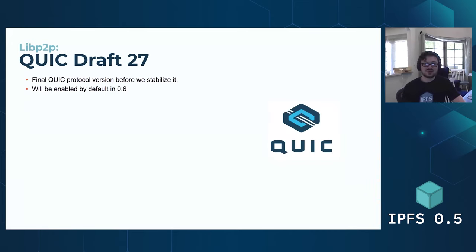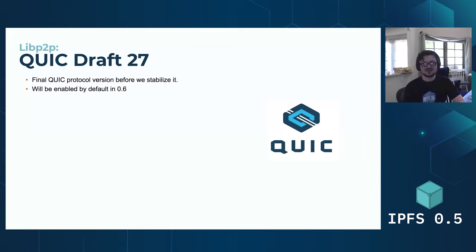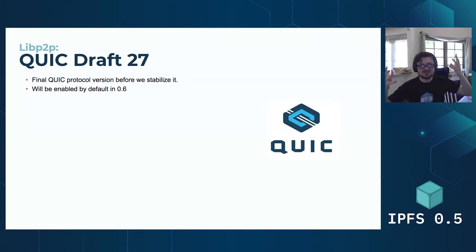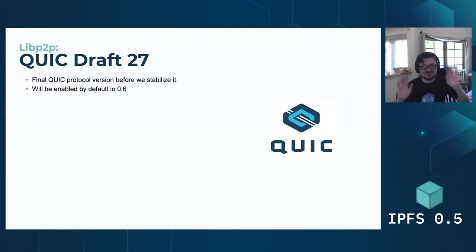QUIC draft 27. We've updated the QUIC protocol version in this release. This should be the final update to the QUIC protocol version before we mark it stable and keep using that same version. Expect to see QUIC enabled by default in 0.6 — this has been a long time in the making. QUIC is a UDP-based transport rather than TCP-based, which means you can keep more connections open, talk to more peers at once, with less overhead — basically just making things faster.